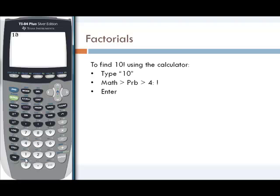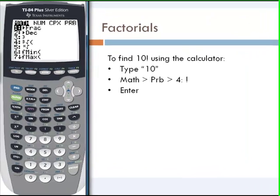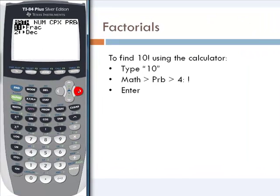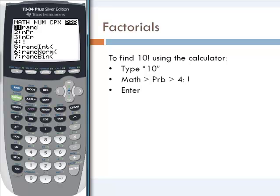And then we would press the math key that's just below the alpha, and then we scroll to the right until we get to PRB, which stands for probability. And then we want to choose option 4 that has the exclamation point, and the exclamation point will stand for factorial.